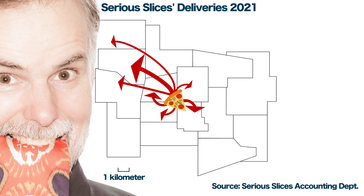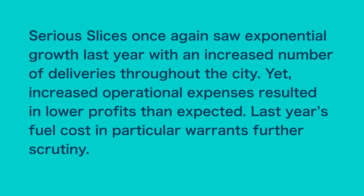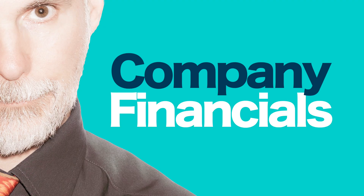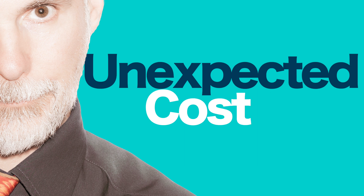Now you're ready to write a three-part description and analysis investigating the increased fuel costs at Sirius Slices. For example, Sirius Slices once again saw exponential growth last year with an increased number of deliveries throughout the city. Yet increased operational expenses resulted in lower profits than expected. Last year's fuel costs, in particular, warrants further scrutiny. The executive summary begins with a brief overview of the company's financial performance last year, followed by identifying an unexpected cost that hurt the company's bottom line.